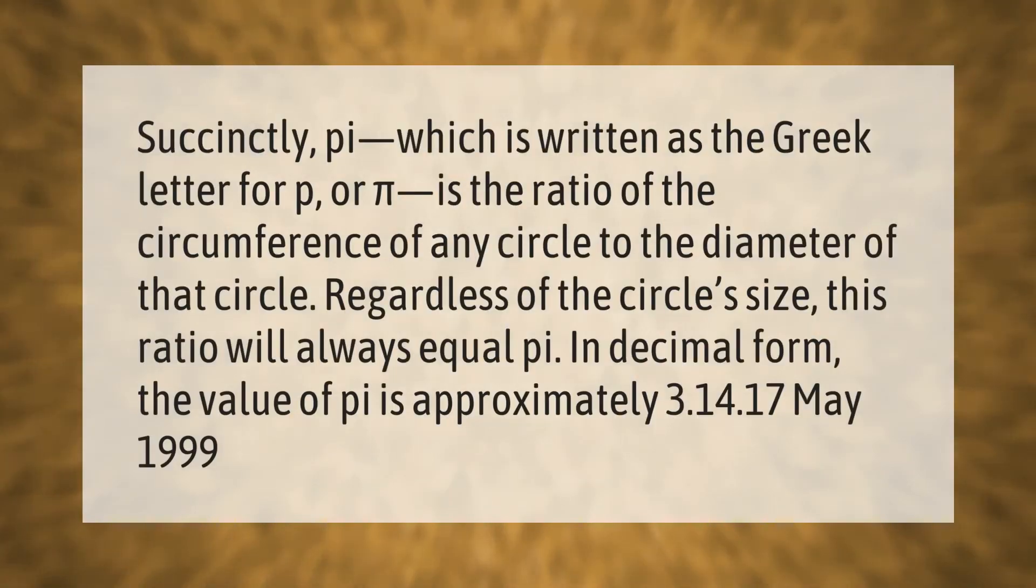Pi, which is written as the Greek letter π, is the ratio of the circumference of any circle to the diameter of that circle. Regardless of the circle's size, this ratio will always equal pi. In decimal form, the value of pi is approximately 3.14.